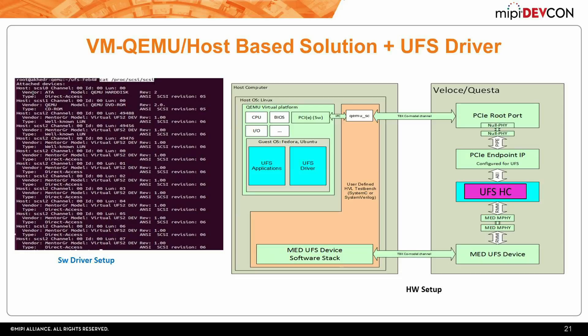This side is running on the emulator and this side is running on the host machine. Here we can see the output of the lsscsi command after the driver boot up. The first two entries are the QEMU hard disk and the QEMU DVD. The next three are the well-known UFS logical units, and from there are the eight UFS logical units.